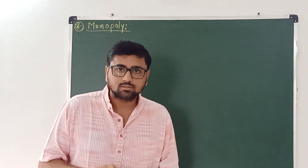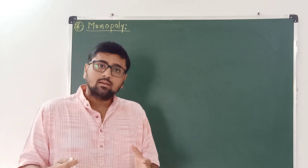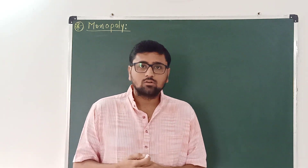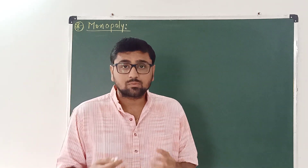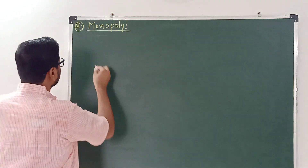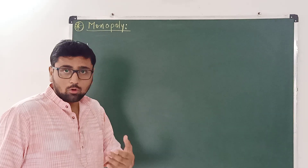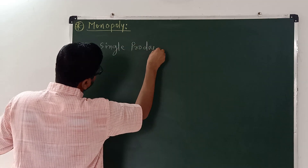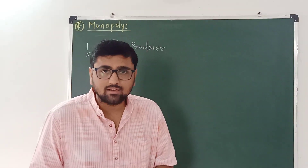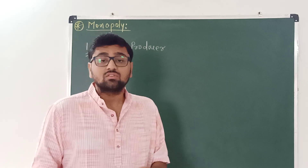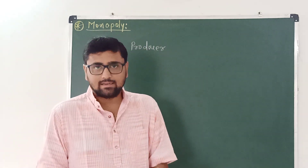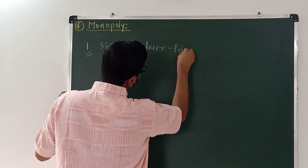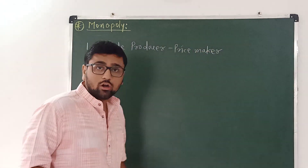In this video, I am going to discuss the features of a monopoly market and revenue of a monopolist. A firm is a monopoly if it is the only producer or seller of its product and if its product does not have any close substitutes. The first characteristic of a monopoly is a single producer — there is only one producer in the market producing or selling the commodity. This means there is no distinction between firm and industry, and hence this single producer is a price maker and not a price taker.